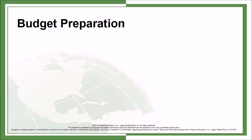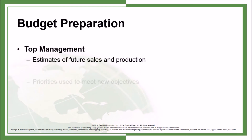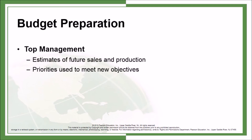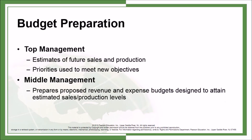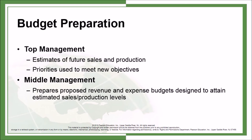Budget preparation: Top management provides estimates of future sales and production priorities used to meet new objectives. Middle management prepares proposed revenue and expense budgets designed to attain estimated sales or production levels.